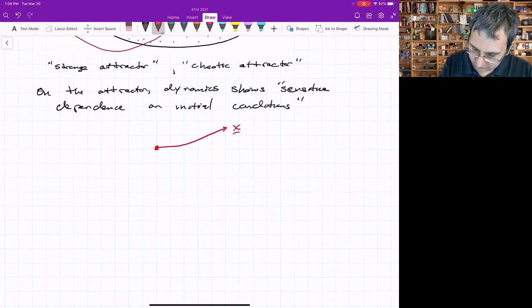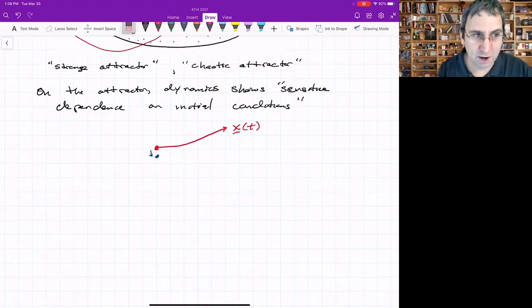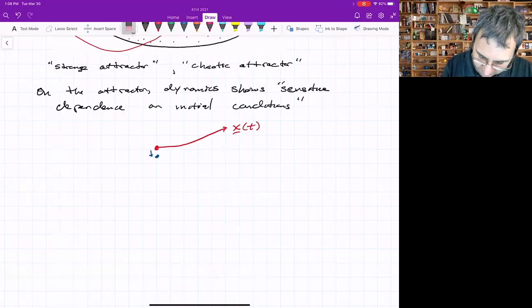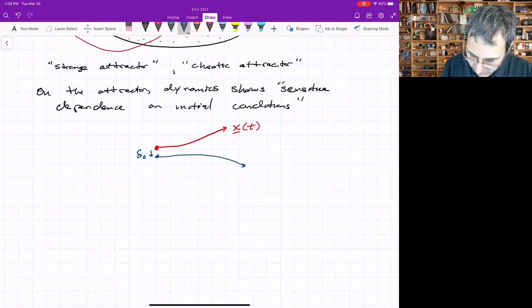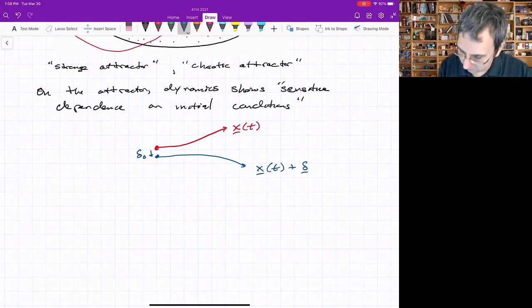We'll write that as the vector x of t and some other nearby initial condition that's separated just by a small amount. And we'll just put the scalar amount delta naught. These two will diverge from each other. So this trajectory is x of t plus delta as a vector t.